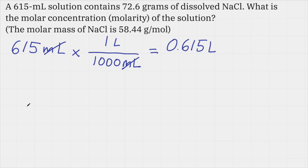So my solution has a volume of 0.615 liters. Now I need to know how many moles of solute are present. I'm given the mass in grams, so I'll need to do a grams to mole calculation first. 72.6 grams of NaCl is the given mass. I'll use a conversion factor. This time I want to end in moles and cancel grams. I'm given the molar mass as 58.44 grams of NaCl per one mole. Here I'll be dividing 72.6 by 58.44. That value is 1.24 moles.